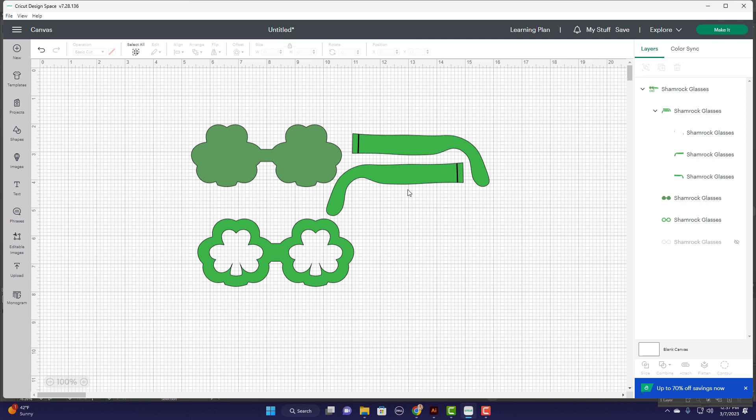One thing that we have to do first is we'll want to come over here and select ungroup, because we need to take these lines right here and we need to change those from cut lines to score lines.